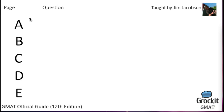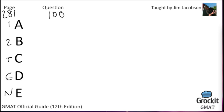On to question 100, page 281. If the bracket notation applied to X denotes the greatest integer less than or equal to X — essentially the floor function — is this operation applied to X equal to zero? We need to find out more about X before we can determine whether this equals zero.